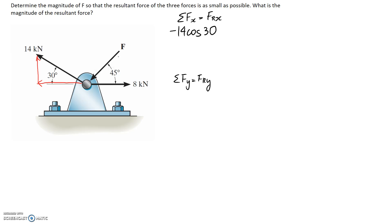If we then move on to this f force, it's going to have an x and a y component. The x component is going to be f, that magnitude that we're looking for, and it's going to be the adjacent side, so it's going to be cos of 45. Again, it's pointing in the negative x direction, so we're going to put a minus in there. Finally, this 8 kilonewton force is only in the x direction, so we can just put plus 8, because it's in the positive x direction.